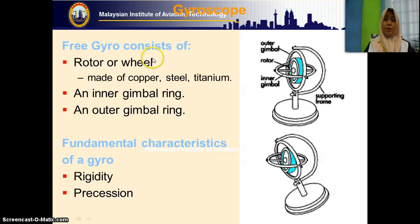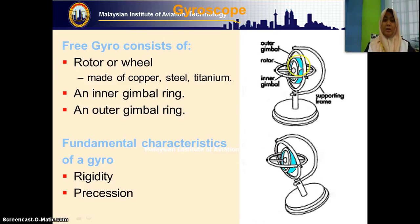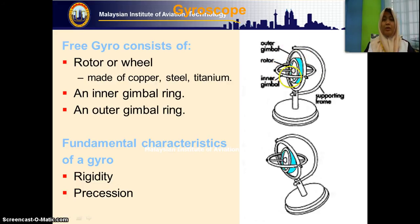If we open up the gyro, what we can see is the rotor. This is the rotor and inner gimbal. Attached to the spin axis of the rotor is the inner gimbal and the outer gimbal. These are the main components of the gyro.